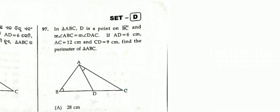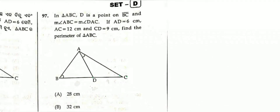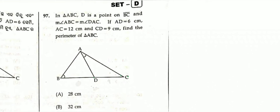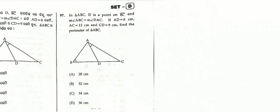Question number 97: In triangle ABC, D is a point on line BC and angle ABC equals angle DAC. If AD = 6 cm, AC = 12 cm, and CD = 9 cm, find the perimeter of triangle ABC. Given AD = 6 cm, CD = 9 cm, AC = 12 cm.